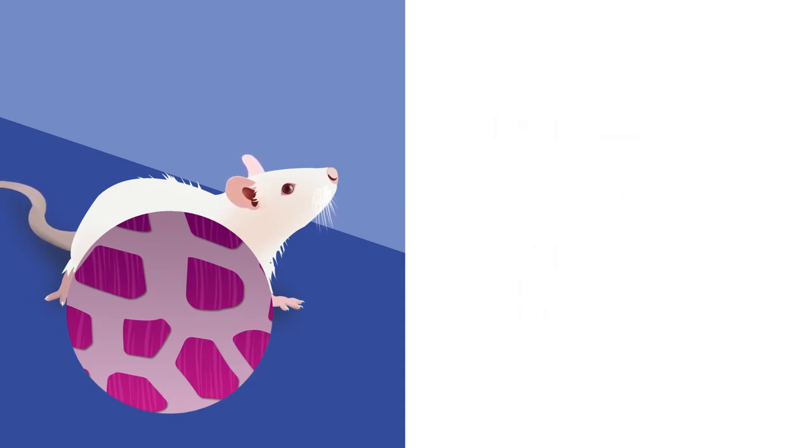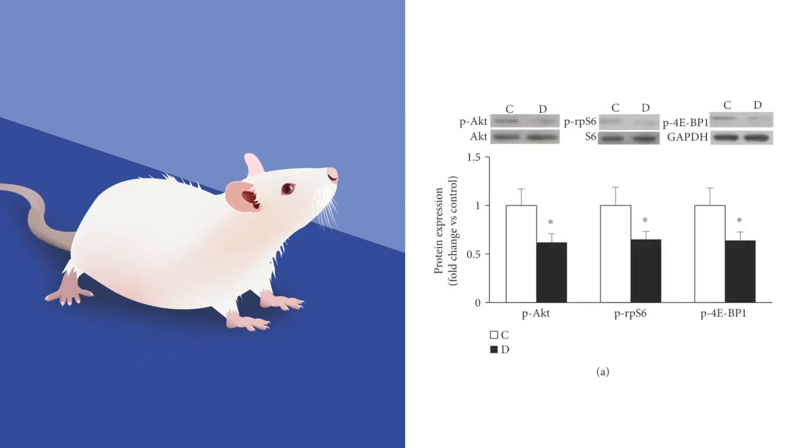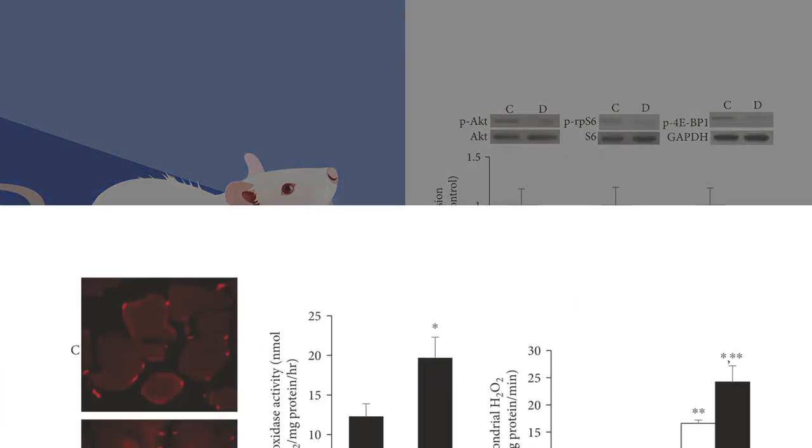Supporting evidence showed that diabetic rats have decreased levels of key regulators involved in protein synthesis, which worsened the rat's muscle condition by tipping their biochemical balance toward protein degradation. But the story isn't over.